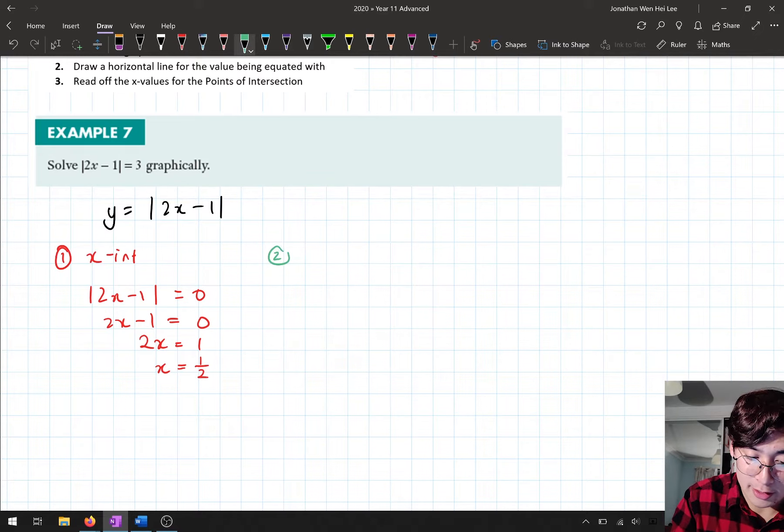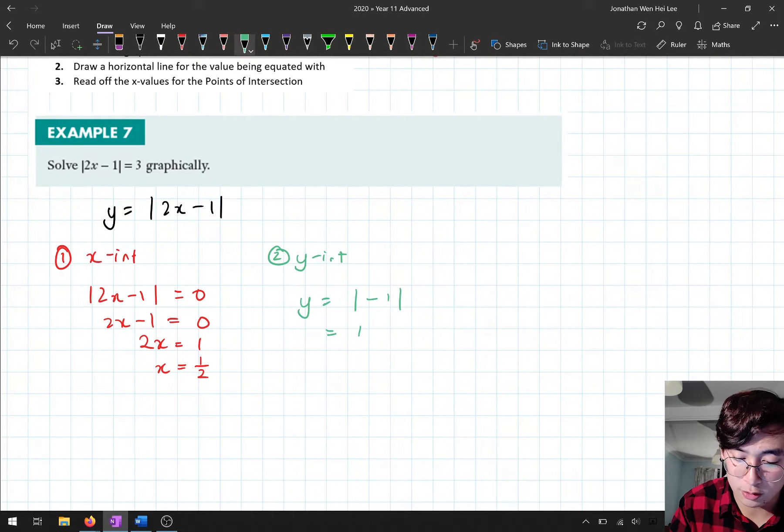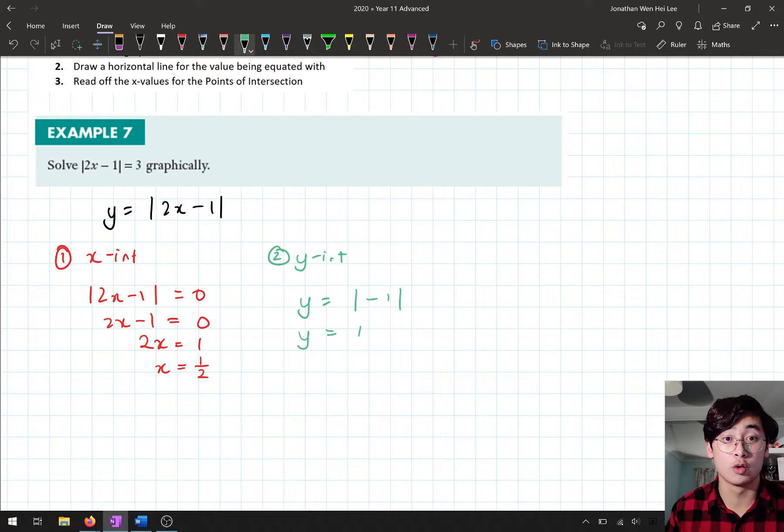The second part is then I find the y-intercept. So the y-intercept is when I sub x = 0. So here, I'm going to get y = |−1|, which is just 1. And so we've got my two points here.